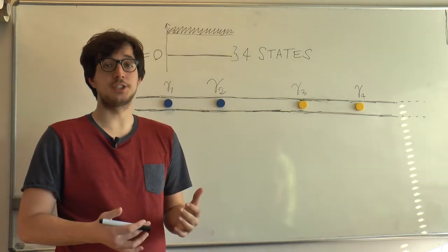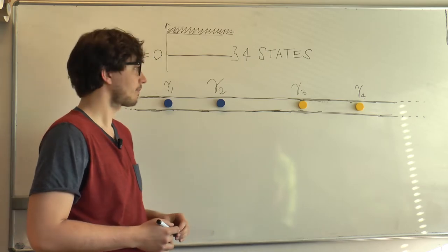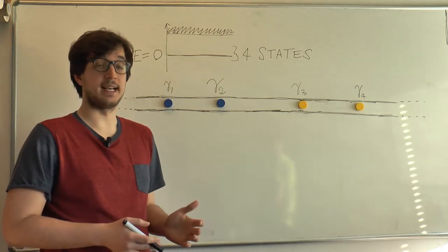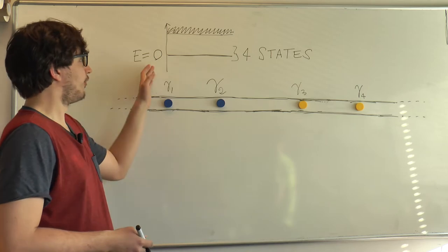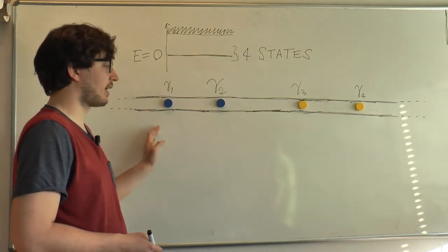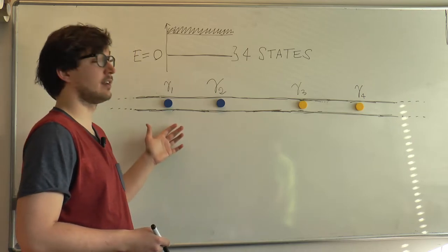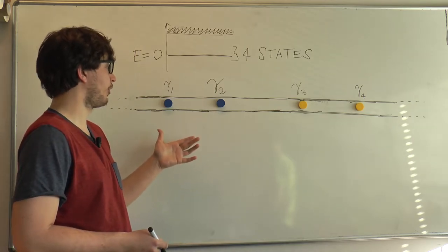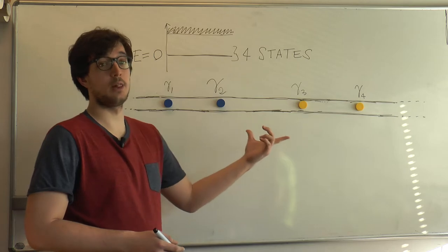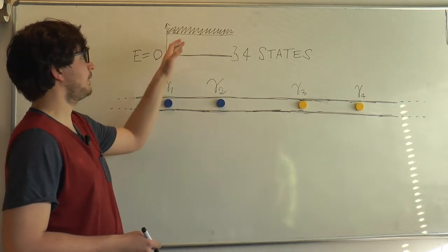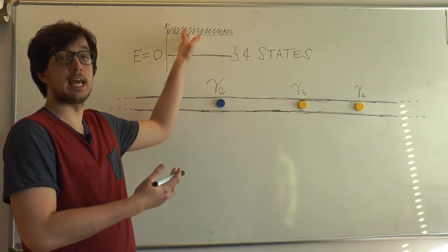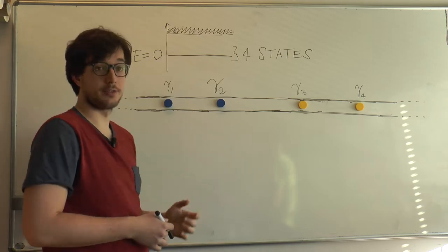How does the energy spectrum of a system like this look like? Well, by now you can probably guess that. There are four zero energy states due to the presence of the Majorana modes, and you can understand these states as being the empty and filled states of fermions formed out of the blue pair and the yellow pair. And then there is a continuum of states above the bulk gap, and these are states living in the bulk of the nanowire.